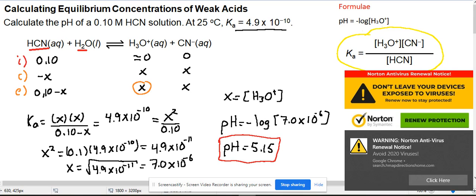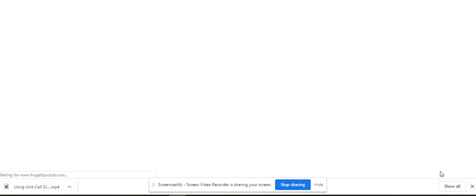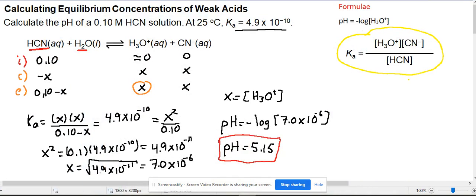Now remember, what we're really saying is that in this solution we have a mixture of all species present because it's a weak acid. When we place it in water, the final concentrations include HCN, H3O+, and CN-. Once we have X, we can calculate all concentrations: the acid is 0.1 minus X, and the base CN- is X. Thank you for watching.